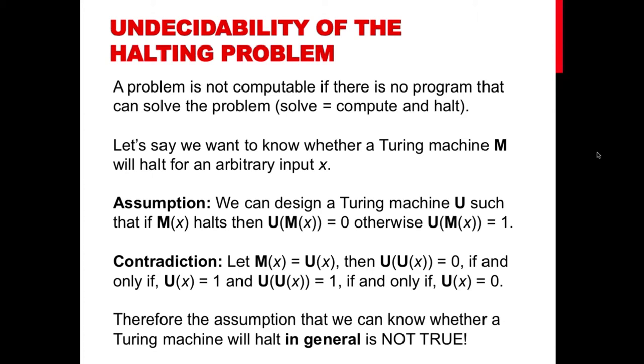But this actually leads to a contradiction if we replace M with U itself. So basically U is getting a description of itself. So if U halts then U does not halt and U does not halt if U halts, which is a contradiction.